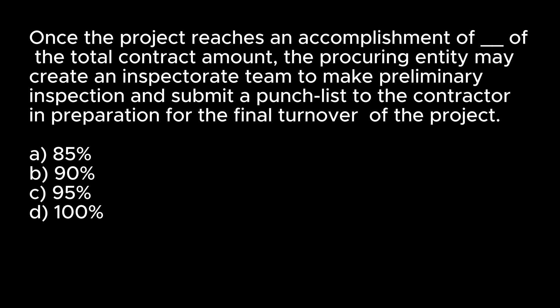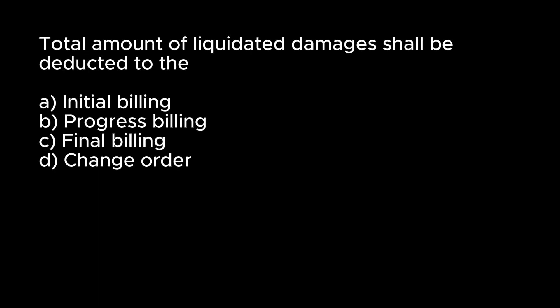Once the project reaches an accomplishment of blank of the total contract amount, the procuring entity may create an inspectorate team to make preliminary inspection and submit a punch list to the contractor in preparation for the final turnover of the project. A. 85%. B. 90%. C. 95%. D. 100%. Answer: C. 95%. Total amount of liquidated damages shall be deducted to the: A. Initial billing. B. Progress billing. C. Final billing. D. Change order. Answer: C. Final billing.